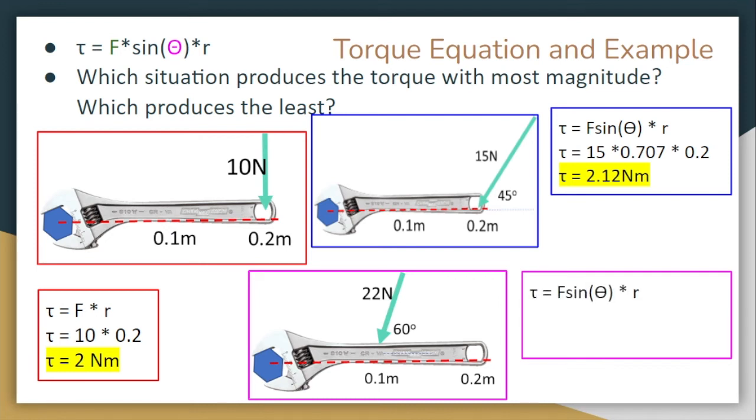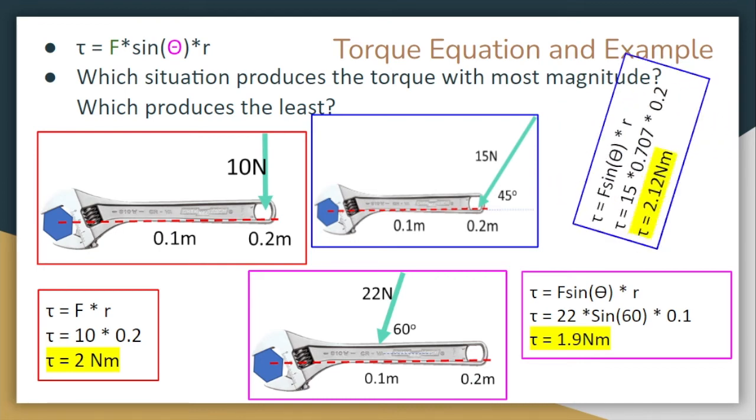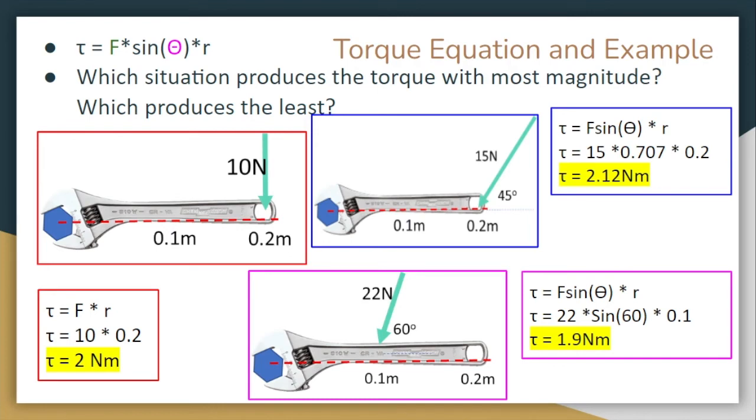Next, we're going to look at the purple box down below and same thing, same equation. This time it's at a 60 degree angle. So we have torque is equal to the force, which is 22 times sine of 60 times 0.1. Multiply everything together and we get torque is equal to 1.9 newton meters. So the one that produced the torque with the most magnitude was going to be the blue one right here. The one that produced the least amount of torque is the pink or purple one down there.